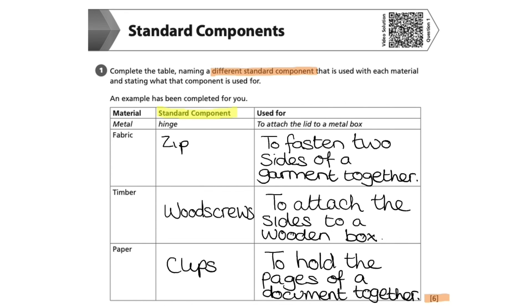And that's this question completed. We have six boxes, an answer in each box, and the use connects to the standard component written down, which in turn connects to the material area provided in the table. All in all, that is a great answer and we should achieve the six full marks for this question.